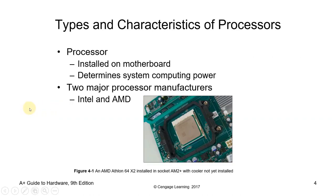Let's start with types and characteristics of a processor. The processor is said to be the brain of the computing system. The processor, microprocessor, or CPU — central processing unit — is installed on the motherboard. It determines the system's computing power. There are two major processor manufacturers: Intel (Integrated Electronics) and AMD (Advanced Micro Devices).